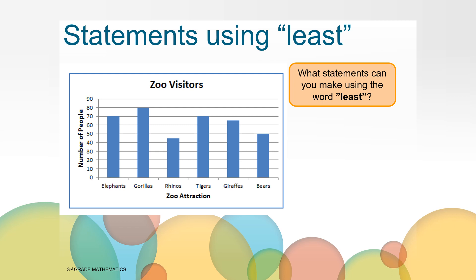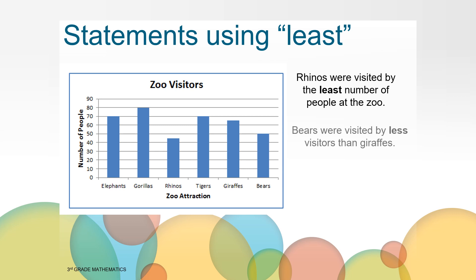Can you come up with a statement using the data from the bar graph that includes the word least? How about the word less or smaller than? Take a moment and write down the statement that you come up with. Here are a couple of examples. You might have come up with something different and that is perfectly fine. Rhinos were visited by the least number of people at the zoo. Another statement could be bears were visited by less visitors than giraffes. Here's another one. The number of people that visited the tigers was smaller than the number of people that visited the gorillas. How did you do with your statement?